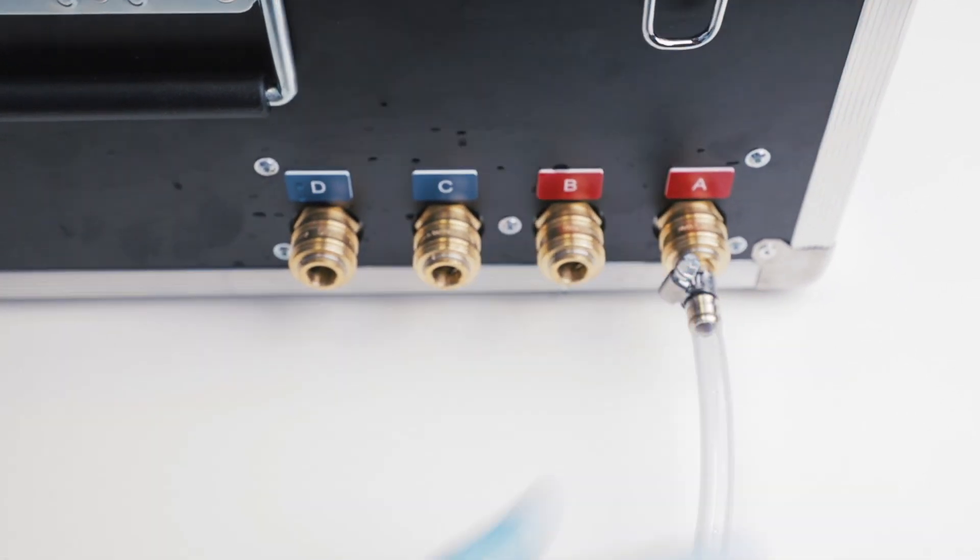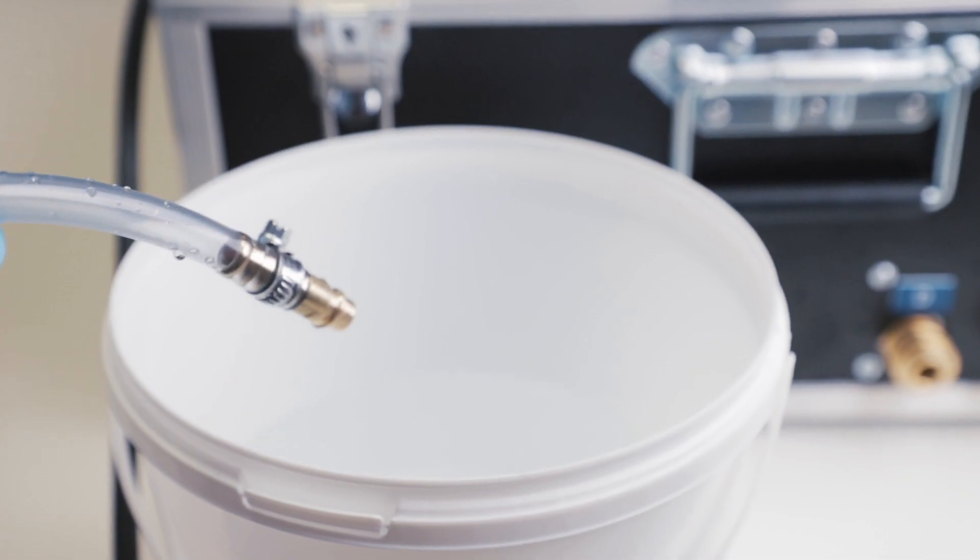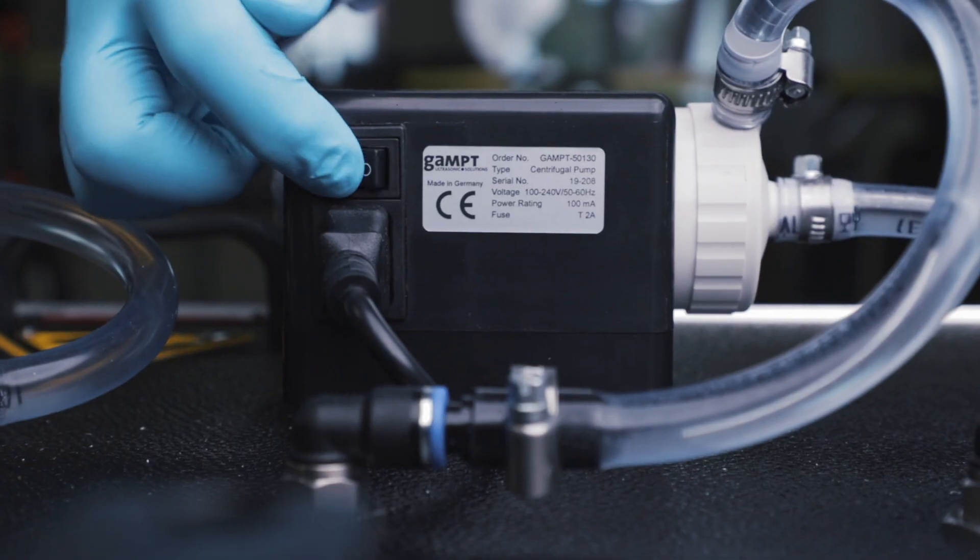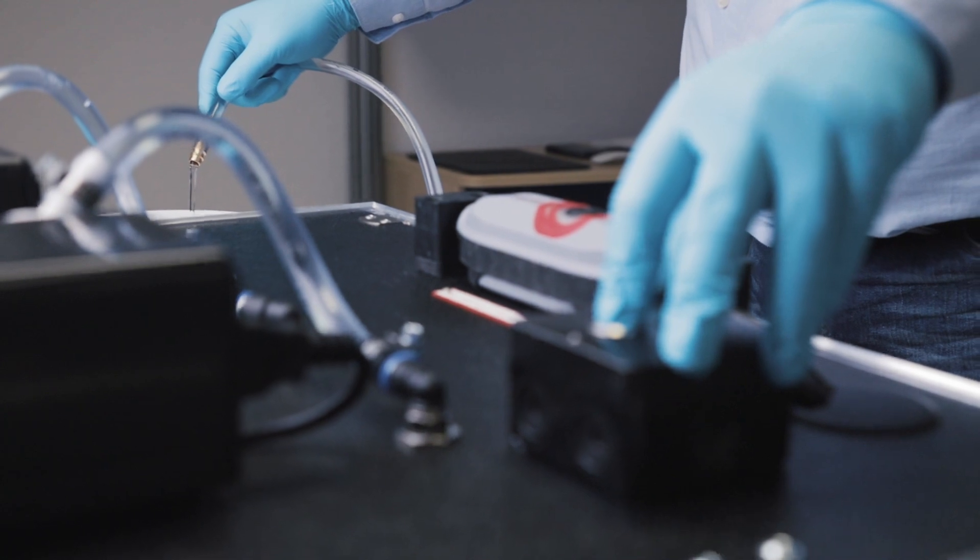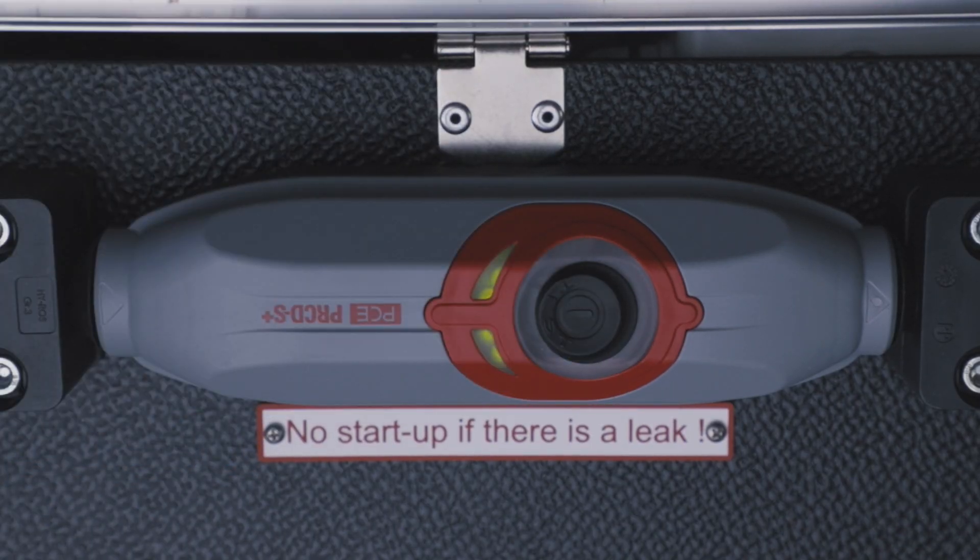Connect one tube to outlet A of the pump case. Put the other end in a bucket. Switch on power and press the filling pump button to empty the tank completely. After the training, you should switch off the security switch.